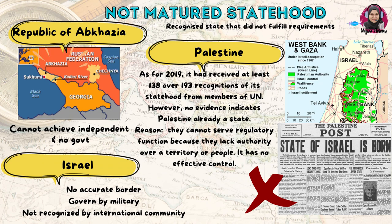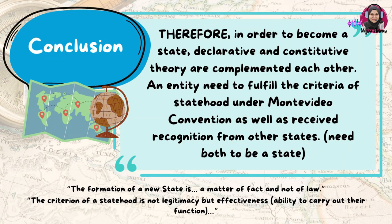The next issue concerns not fully matured statehood — take the case of Palestine. As of 2019, Palestine had received at least 138 recognitions of statehood from United Nations members. However, there is no evidence that Palestine is already a state, because it cannot serve a regulatory function — it lacks authority over a territory and people, with no effective control. In conclusion, to become a state, both declarative and constitutive theories are complementary: an entity must fulfill the criteria of statehood under the Montevideo Convention and receive recognition from other states.